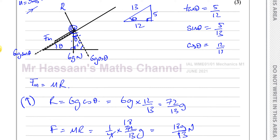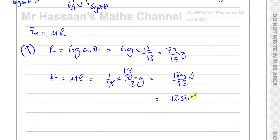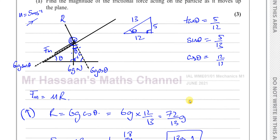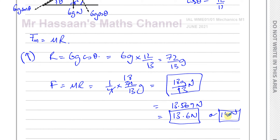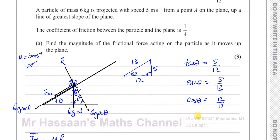So the answer to Part A is 18g/13 Newtons. Writing it in decimal form: 18 × 9.8 ÷ 13 = 882/65 ≈ 13.569 Newtons, so to 3 significant figures that's 13.6 N, or to 2 SF it's 14 N. Any of these forms are acceptable. 2 SF is acceptable because we're using g = 9.8 as requested in the instructions. That's Part A done.